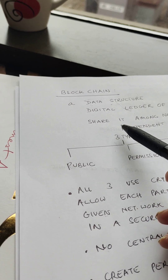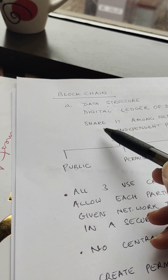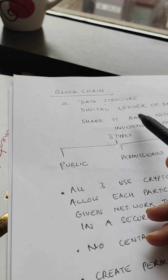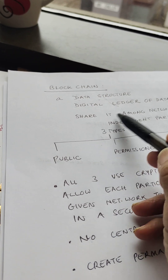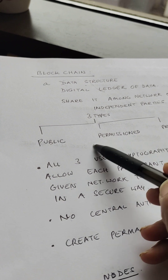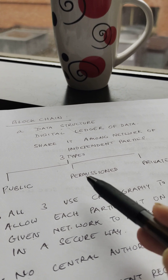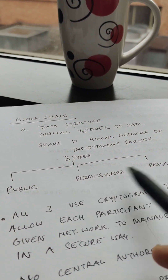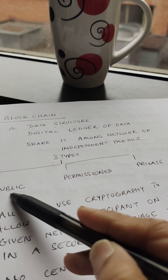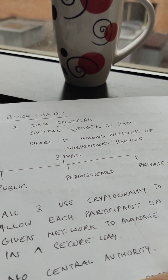A blockchain is a data structure that makes it possible to create a digital ledger of data and share it among a network of independent parties. There are different types of blockchains: public blockchains, permissioned blockchains, and private blockchains.